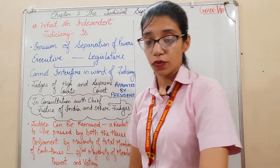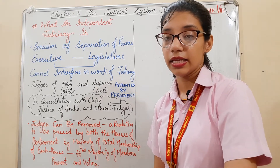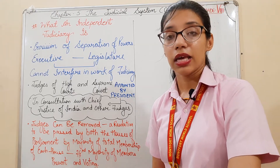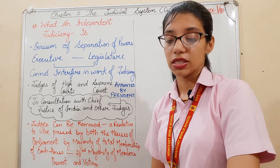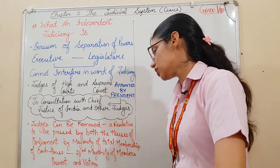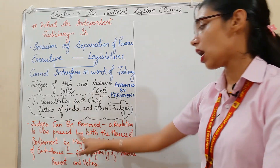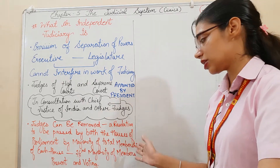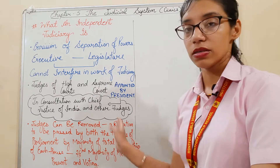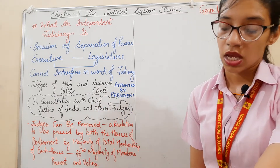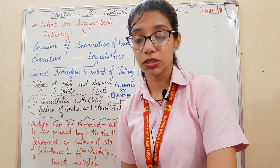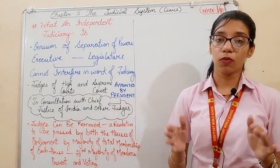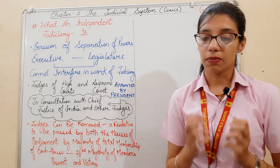Judges can be removed from office only by the President if they are found to be misusing their power, if there is misbehavior, misconduct, or incapacity to give judgment. To remove a judge, a resolution must be passed by both Houses of Parliament — by a majority of the total membership of each House, meaning two-thirds of members present must vote for such resolution. Removal of a judge is a very difficult process. A judge cannot be removed if there is no general consensus among the members of Parliament.